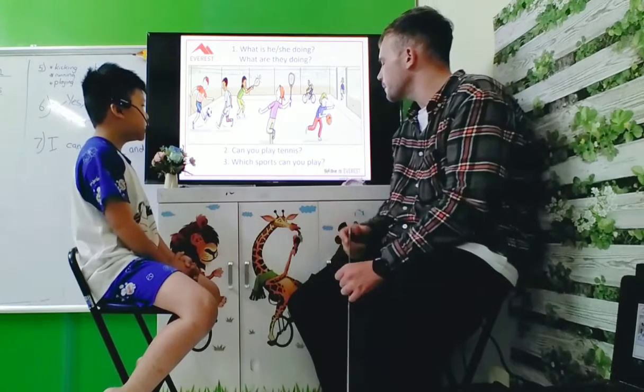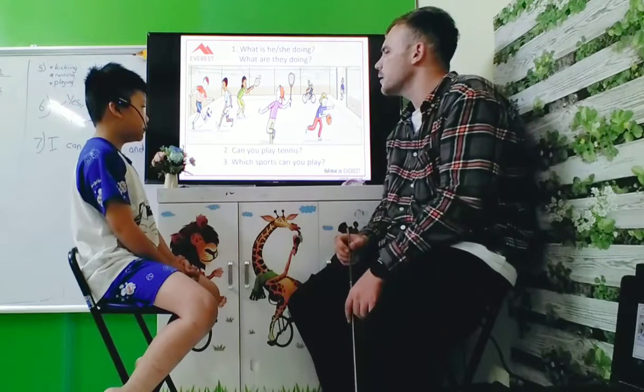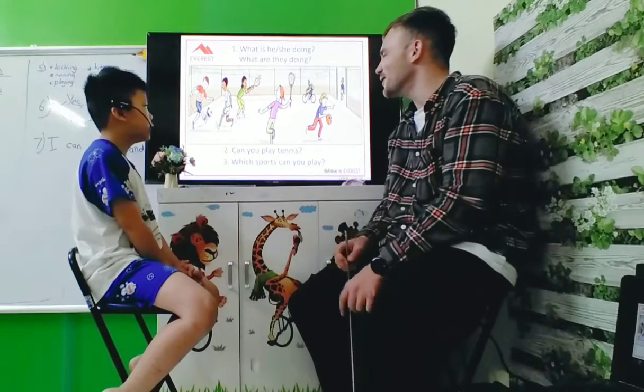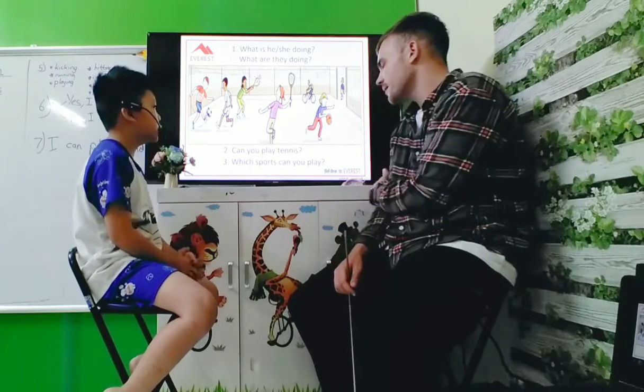What is she doing? She is bouncing basketball. Basketball. Good. What is she doing? She is walking. Okay.